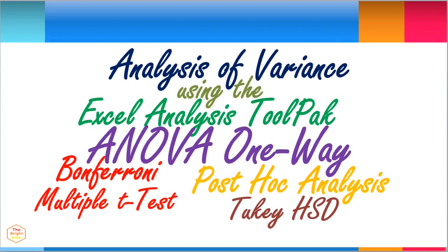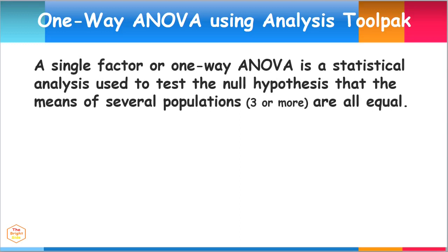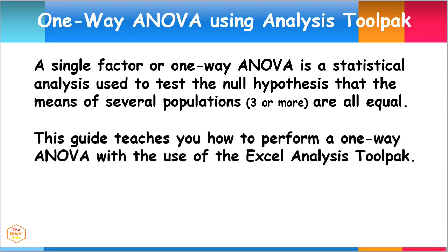Analysis of variance using the Microsoft Excel Analysis ToolPak. A single factor or one-way ANOVA is a statistical analysis used to test the null hypothesis that the means of several populations are all equal. This guide teaches you how to perform a one-way ANOVA with the use of the Excel Analysis ToolPak.